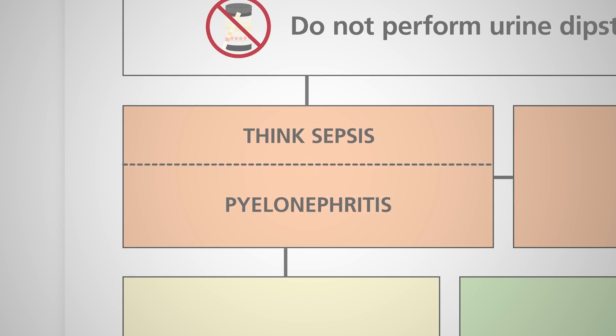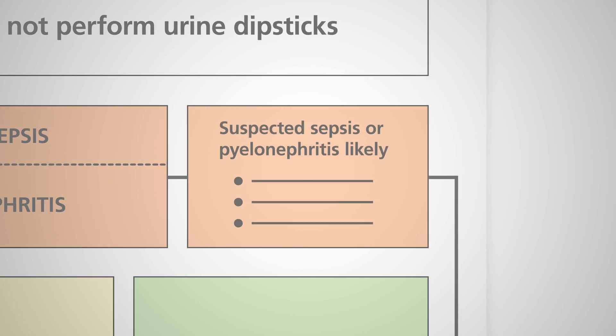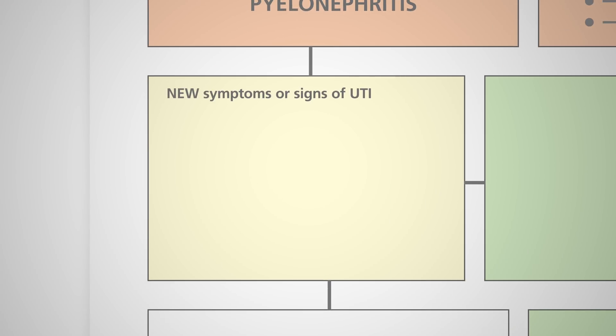Pyelonephritis, which is a UTI affecting the kidneys, is a serious infection and may require hospital treatment. If sepsis or pyelonephritis are suspected, follow the advice in the next box and consider the need for hospital admission. If there is no suspicion of sepsis or pyelonephritis, use the box below to assess for signs and symptoms of a UTI.